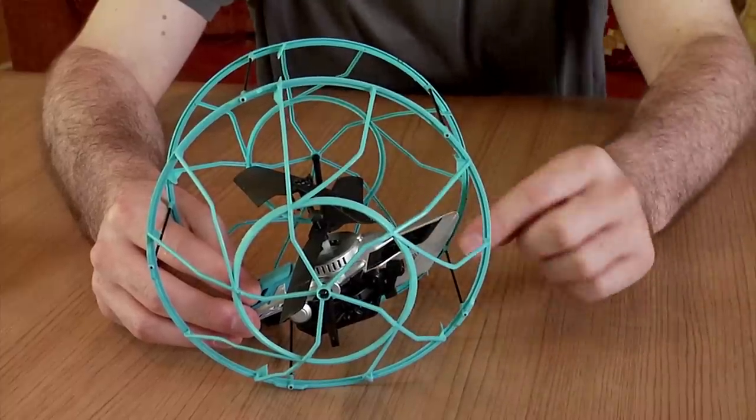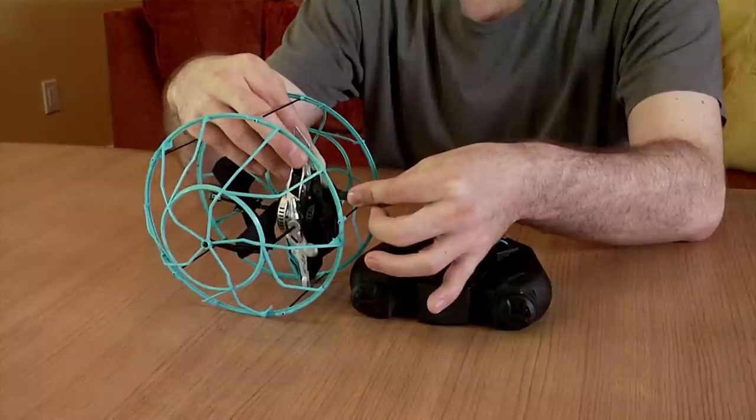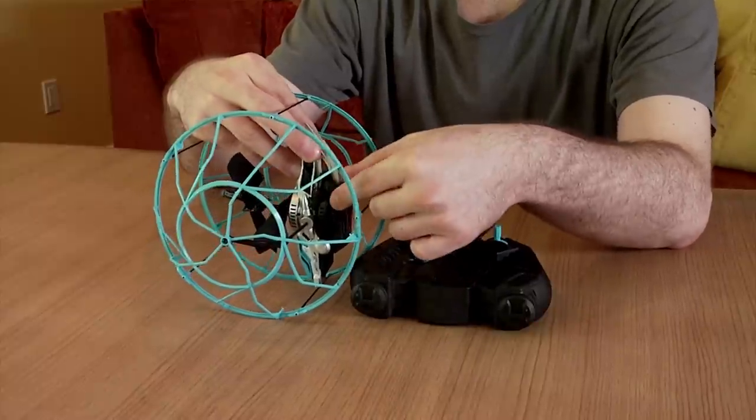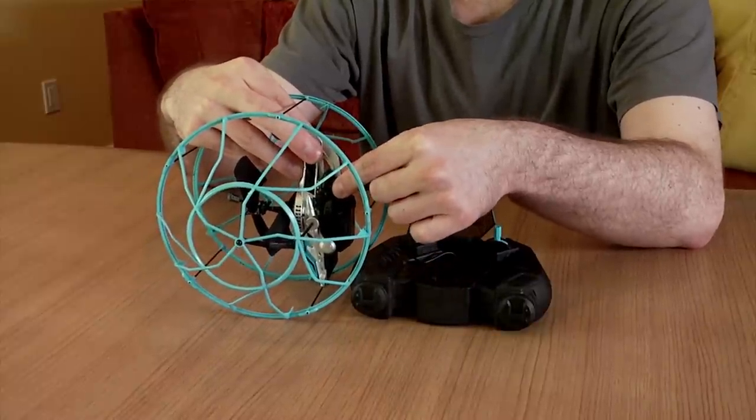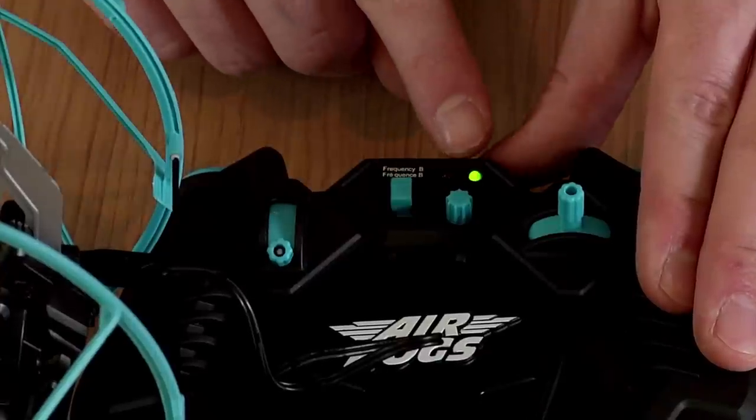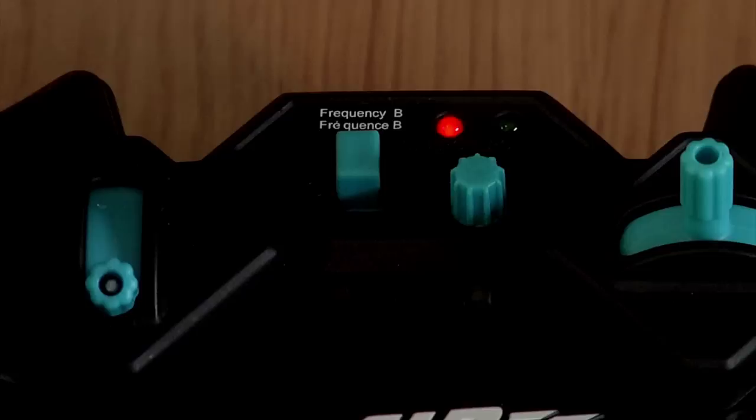To charge your Rollercopter, ensure the aircraft is off. Align the charging cable from the controller and insert it into the charging port. No light should be blinking. You can now turn on the controller. A red light indicates that charging has begun.